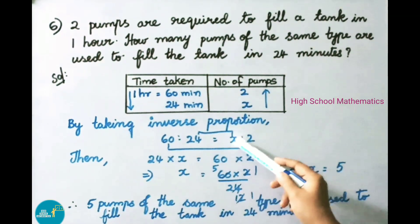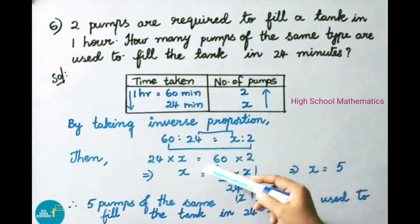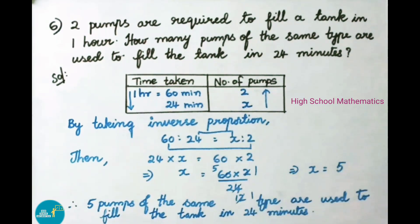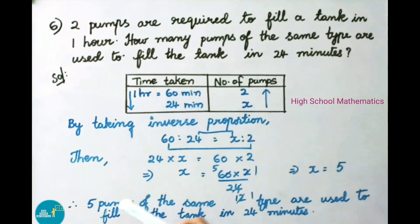We know product of means is equal to product of extremes. So, 24 into X is equal to 60 into 2. That implies X is equal to 60 into 2 by 24. Simplifying: 2 goes into 24 twelve times, and 12 goes into 60 five times. That implies X is equal to 5. Therefore, 5 pumps of the same type are used to fill the tank in 24 minutes.